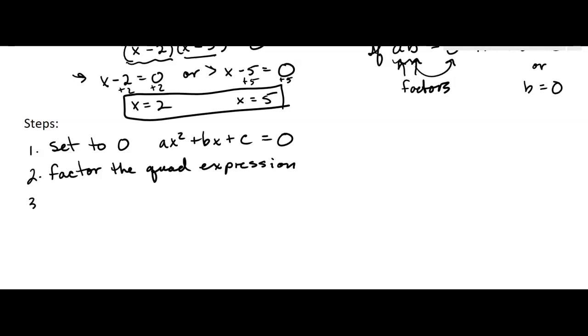Then you're going to set each factor to zero. Remember, factors are things that we're multiplying, and then you solve the linear equations. And finally, you have to write the answer.